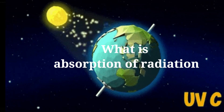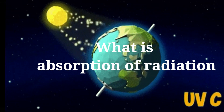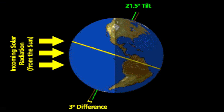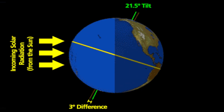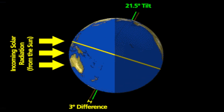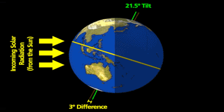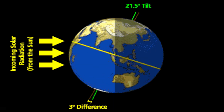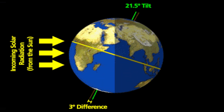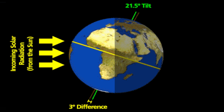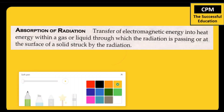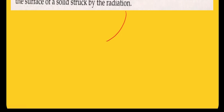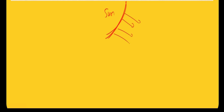What is absorption of radiation? It is very important. When sun rays are coming without any medium — this is incoming solar radiation. The sun rays are a kind of electromagnetic radiation.